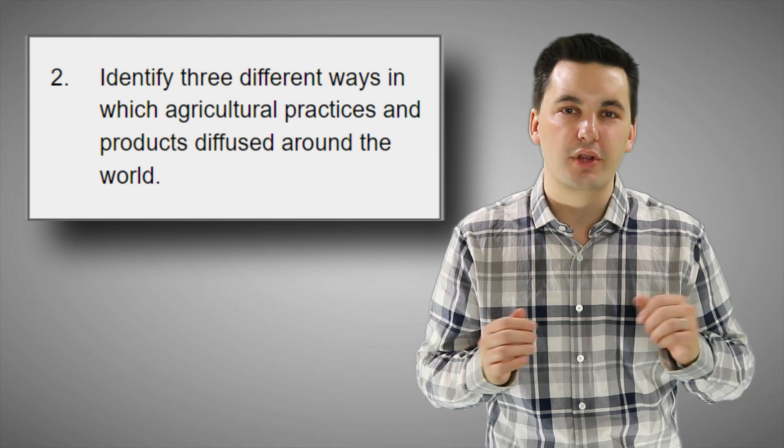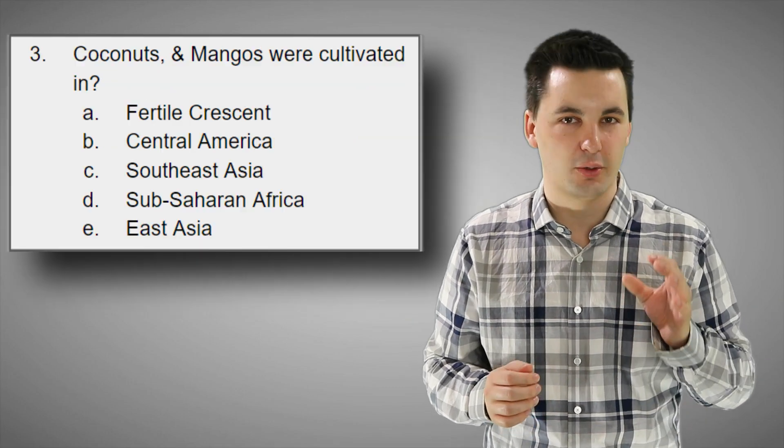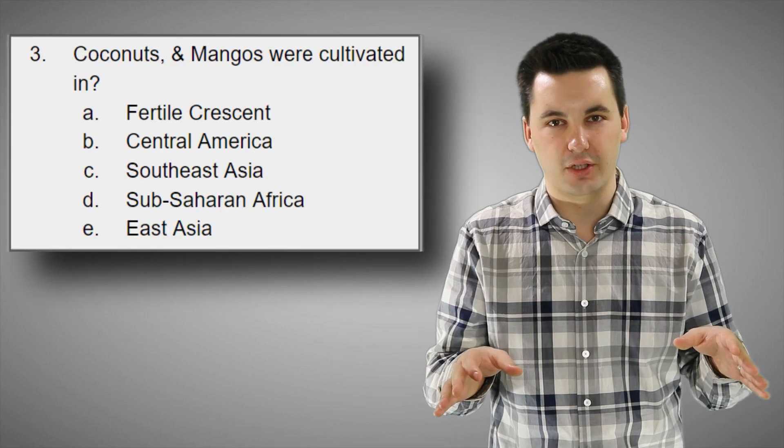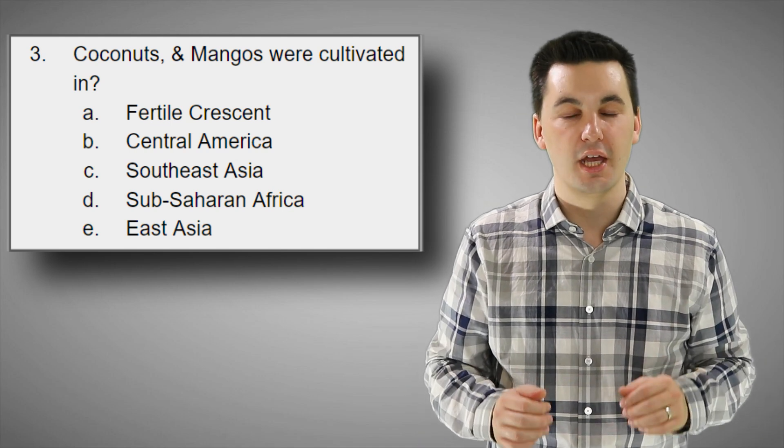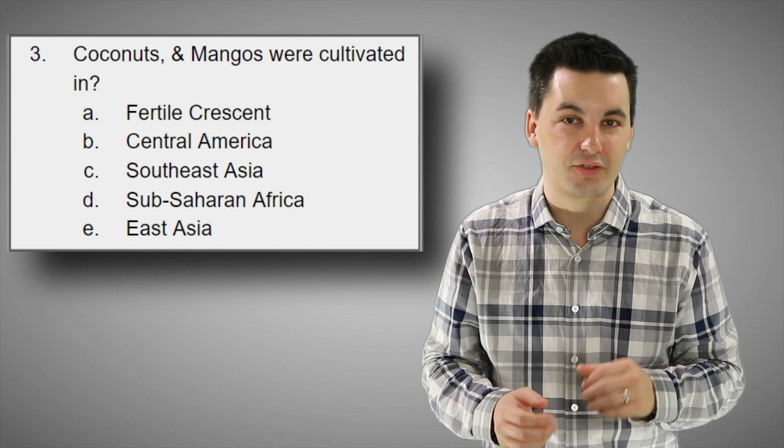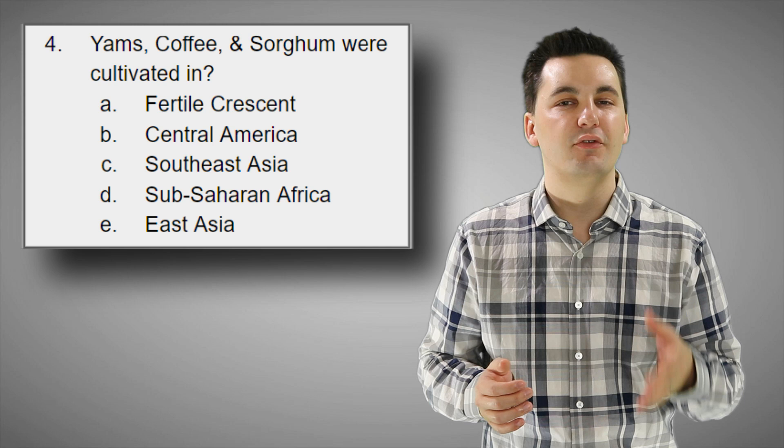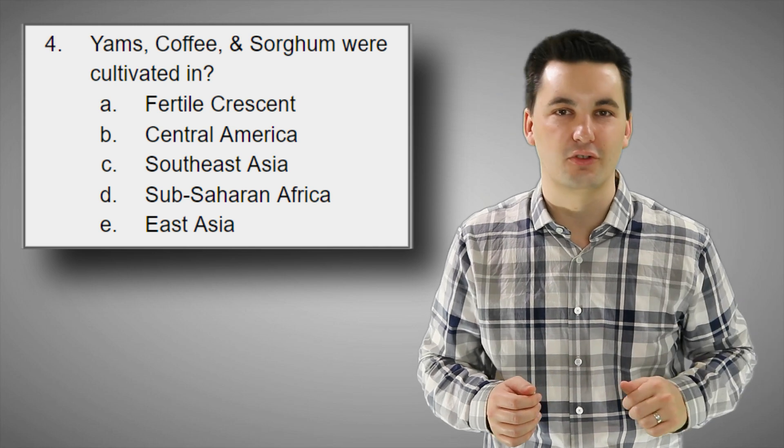And if you do need a little bit more help with AP Human Geography, check out my Ultimate Review Packet. It is a great resource that covers all seven units of AP Human Geography. It'll definitely help you get an A in your class and a five on that national exam. If you're interested in the resource, you can find a link in the description below.